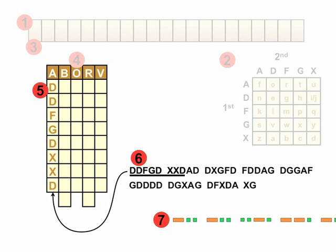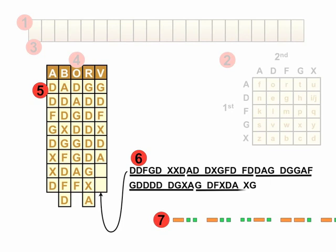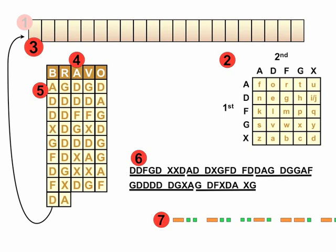We start with the A column, then go to B, then O, then R, then V. Complete. The next step is to shuffle it up — back to the Bravo arrangement. Now we read across horizontally, starting with A, G, D, G, all the way across.